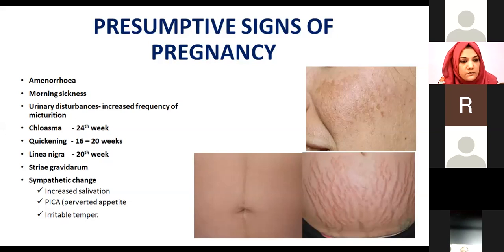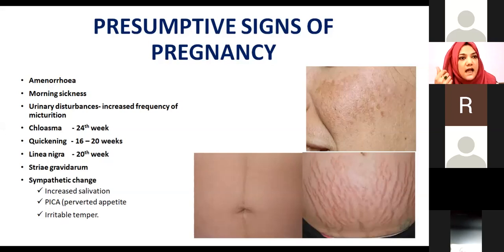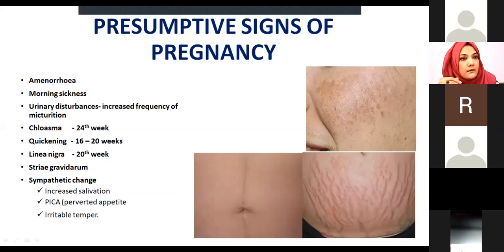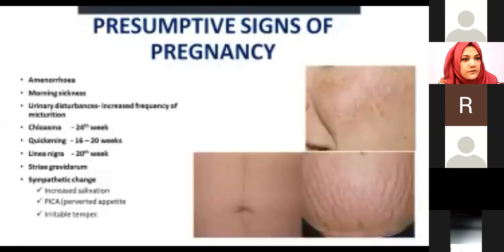Chloasma means hyperpigmentation in females. In some females, there is hyperpigmentation on the forehead and cheeks, as you can see in the picture. This appears between 20 to 24 weeks of gestation and onwards. Again, this is not a definitive sign — it is a presumptive sign.